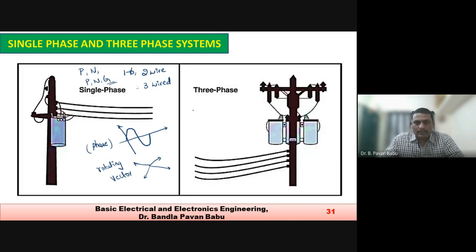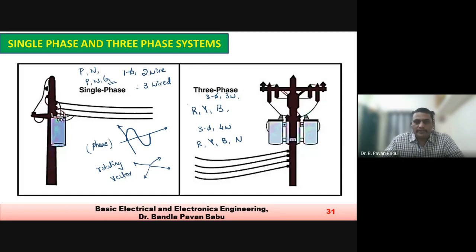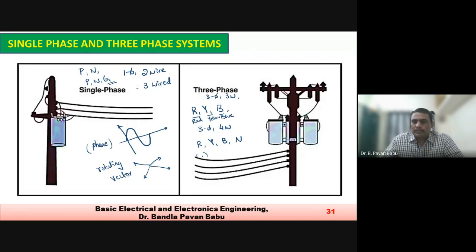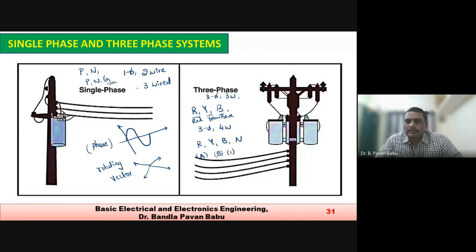In three phase, the phases are R (red), Y (yellow), and B (blue) — some materials use A, B, C instead. The neutral may be grounded or ungrounded. Since the total cycle completes at 360°, each of the three phases has a phase difference of 120°: R phase, Y phase, and B phase are each separated by 120°, totaling 360°.